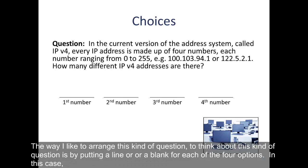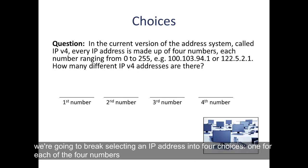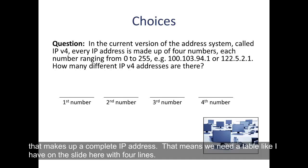The way I like to arrange this kind of question is by putting a line or a blank for each of the four options. We're going to break selecting an IP address into four choices, one for each of the four numbers that makes up a complete IP address. So that means we need a table like I have on the slide here with four lines.